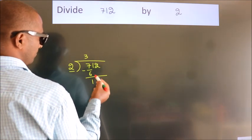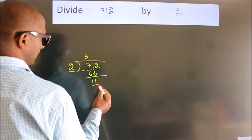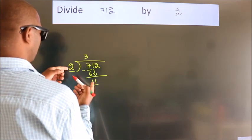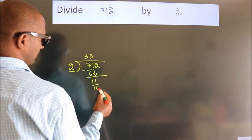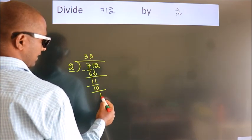After this, bring down the beside number. So 1 down, so 11. A number close to 11 in 2 table is 2, 5, 10. Now we subtract, we get 1.